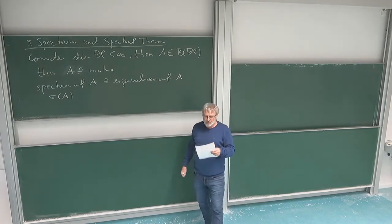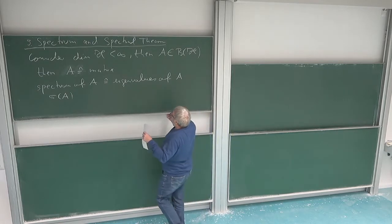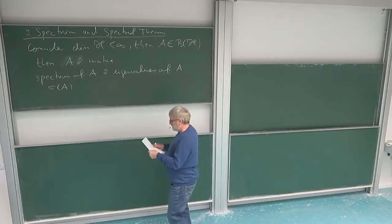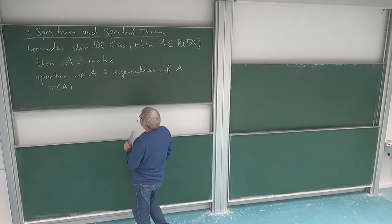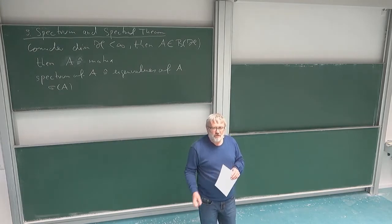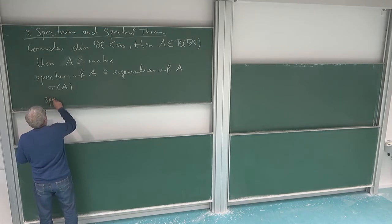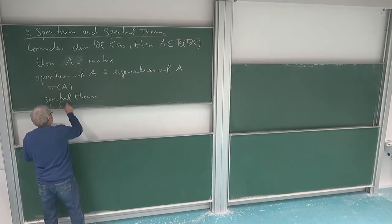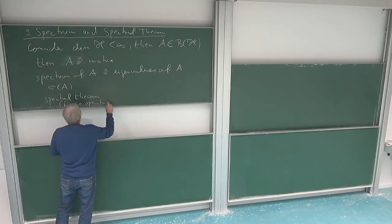Eigenvalues will correspond somehow to possible values of measurements given by a measuring device which corresponds to A. So that is the spectrum. And then there is the spectral theorem which tells us that if I have a symmetric matrix, I can actually diagonalize it and then I get a matrix where the eigenvalues are on the diagonal. So the spectral theorem — a basic result from linear algebra — for self-adjoint operators, which are the only ones we are interested in.